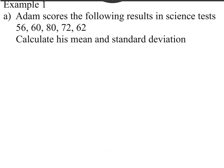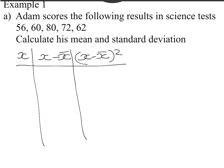Example one: Adam scores the following results in his science tests: 56, 60, 80, 72, 62. Calculate his mean and standard deviation. The first thing we do in a standard deviation question is we draw out this table. We put each of our numbers straight into the table. I'm not putting the numbers in order purely because people who try to put the numbers in order might miss one or accidentally change one.